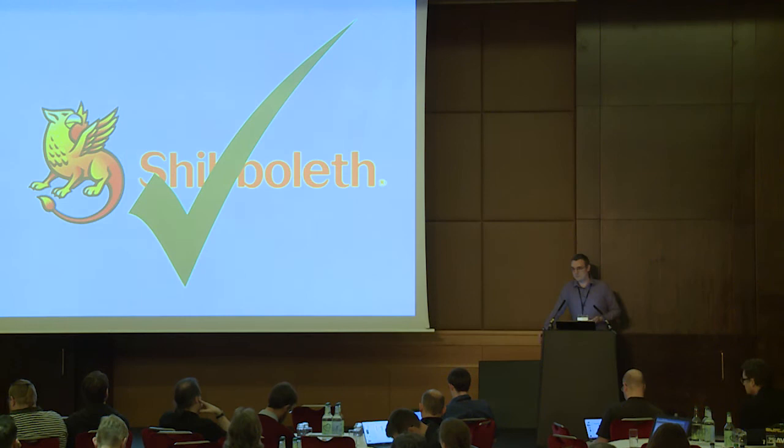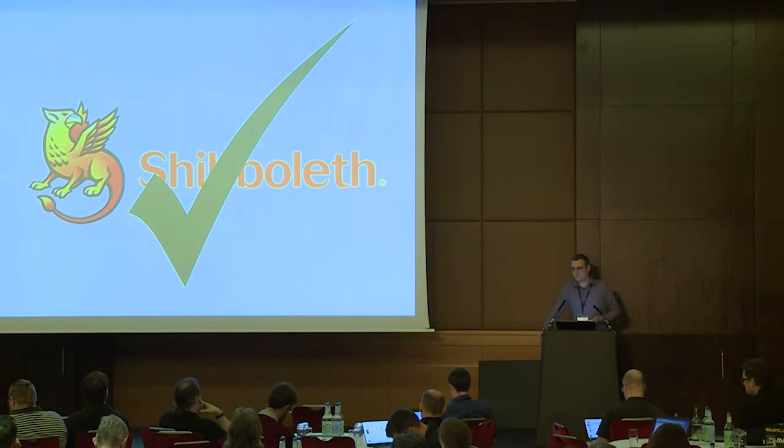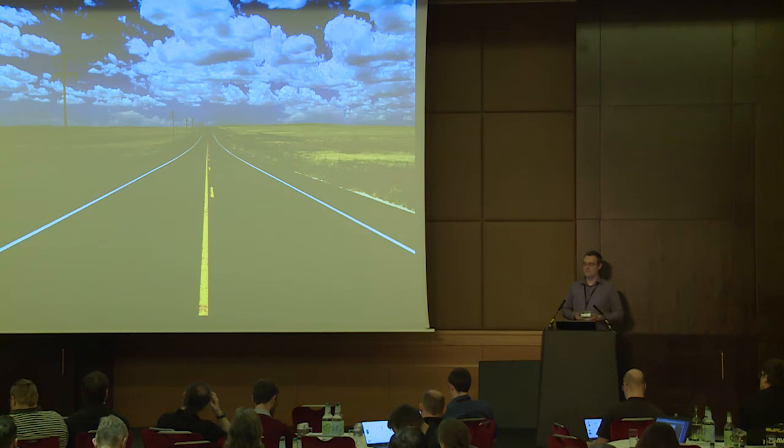Some successes with this approach: a couple of times we've been able to notice that Shibboleth is down and get it fixed before anybody complained. That's an interesting one because we're monitoring somebody else's service, but you have to get it done. With the events queue, we now have a threshold set so if it gets beyond a certain level it'll warn us, and we no longer have to notice it's broken — we can fix it really quickly now.